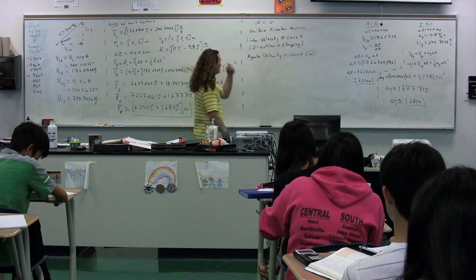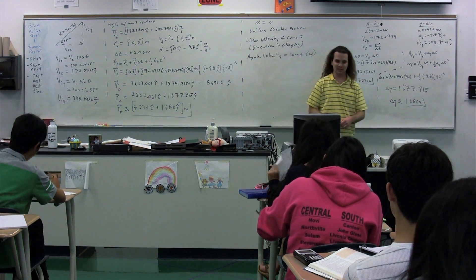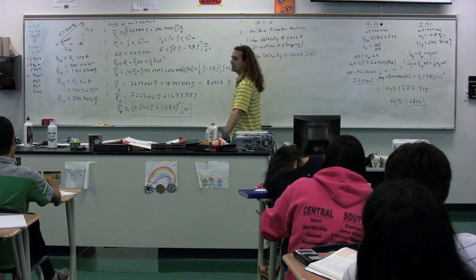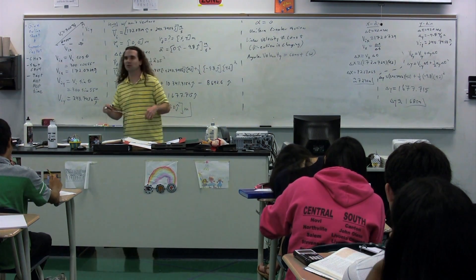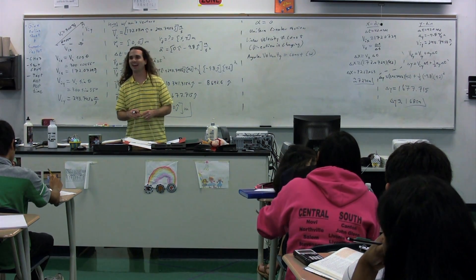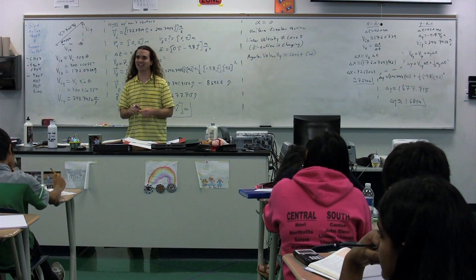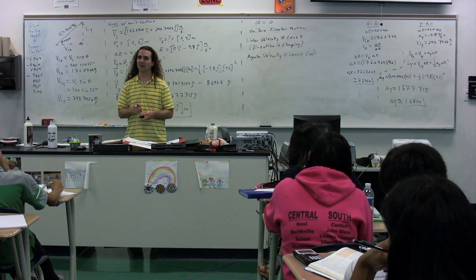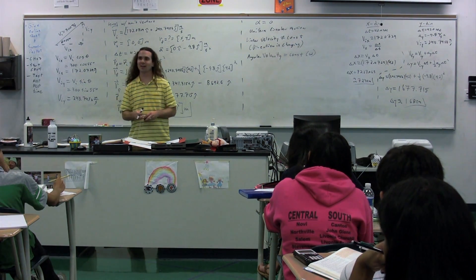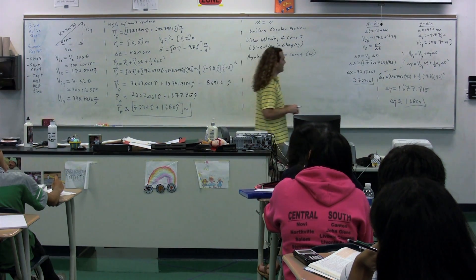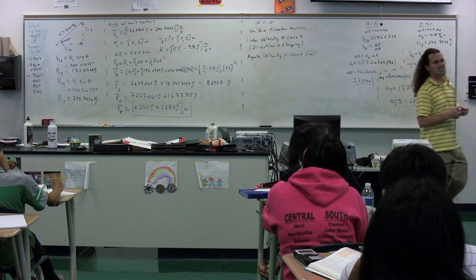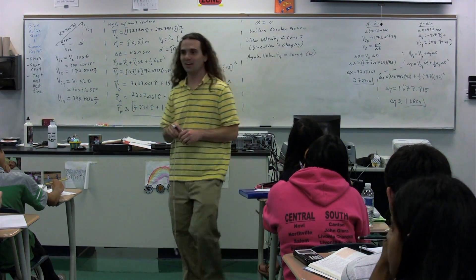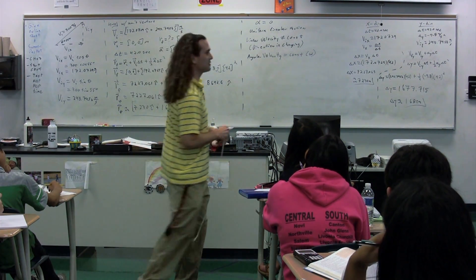So this means if the linear velocity is not constant, what must be true? Nicolai. Can you repeat that? Yes, I could. If the linear velocity is not constant, what must be true? It's changing direction. You've gone backwards there. Yes, it's changing direction. Therefore, the linear velocity is not constant. Therefore, Flanagan. It's accelerating. There must be an acceleration. Right.